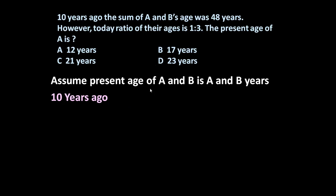10 years ago age of A will be A minus 10, plus age of B will be B minus 10, because it is 10 years ago. The sum of A and B's age was 48 years means A plus B is equal to 48 years. This is A's age, this is B's age 10 years ago. Now let us simplify this equation. It becomes A plus B is equal to 68 years. This is equation number 1.